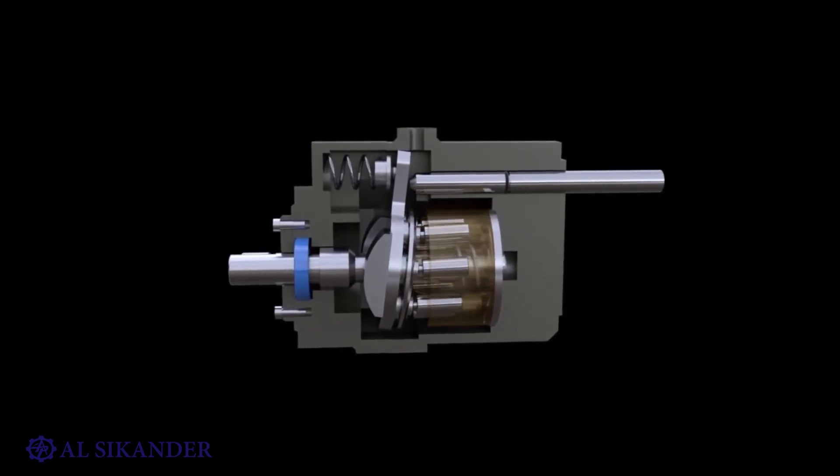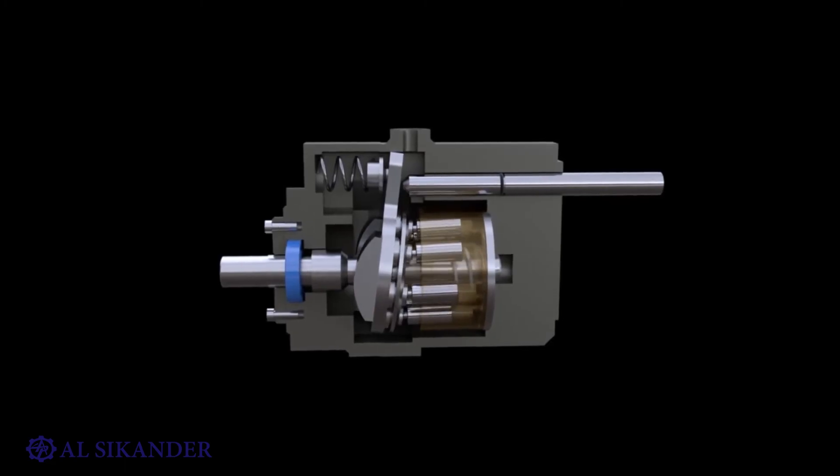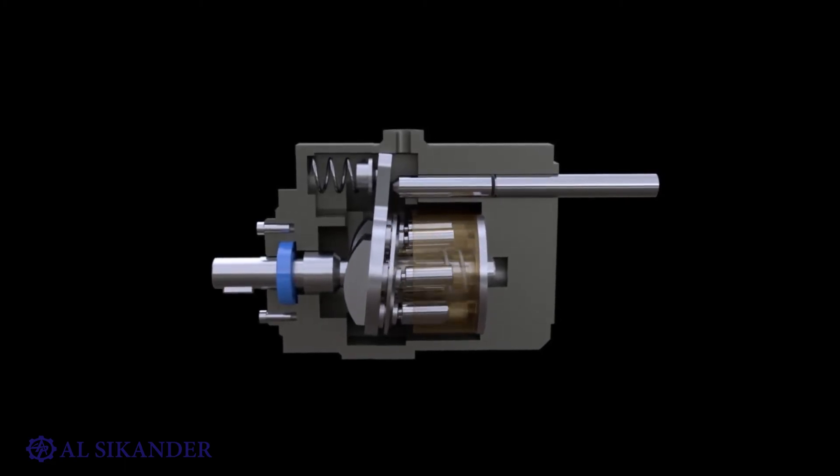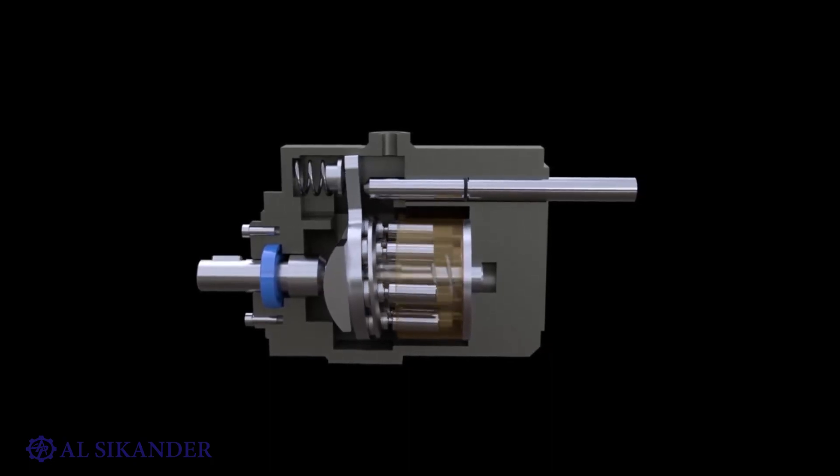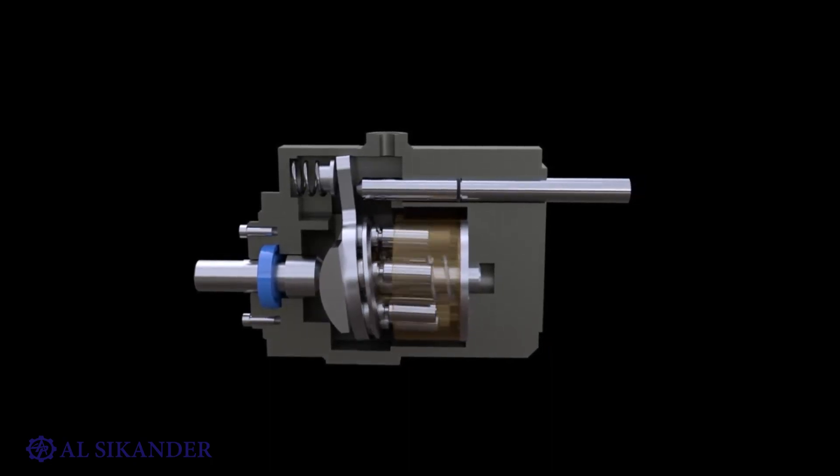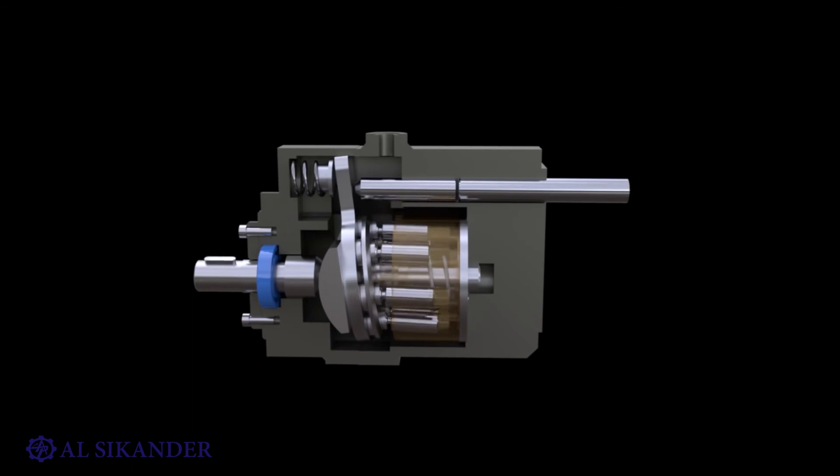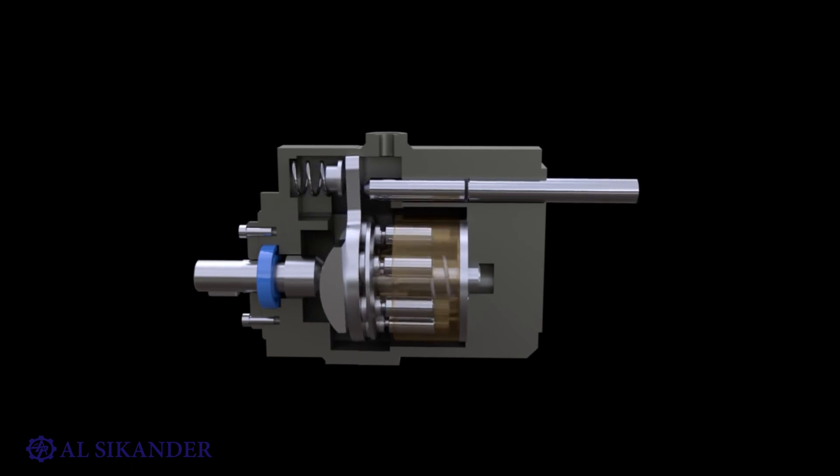The control line may be pressurized from the discharge line of the pump. In this case, a special valve is used to regulate the control action. More complex schemes can be used to control a controlled pump. For example, the so-called LS regulation, which allows you to reduce energy losses when controlling the speed of the hydraulic drive. We will try to tell about such control in one of our videos.